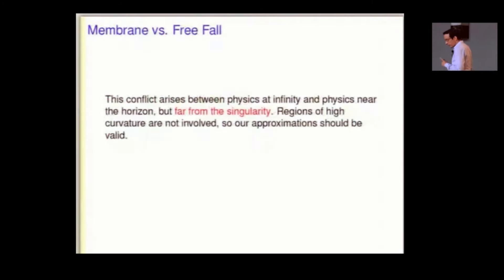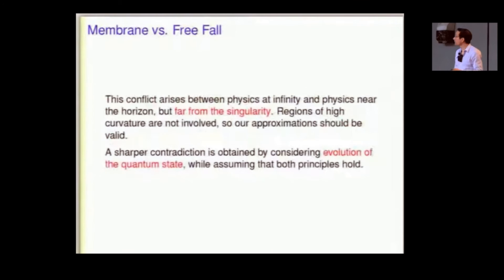One thing I want to say is that all the apparent conflicts I'm going to talk about arise in a regime where we think we have control. This is not somewhere near the singularity inside the black hole. Again, think of the black hole as a billion light-years across. We understand physics in this regime. We can't appeal to some miracle coming from, you know, Planck-scale corrections.